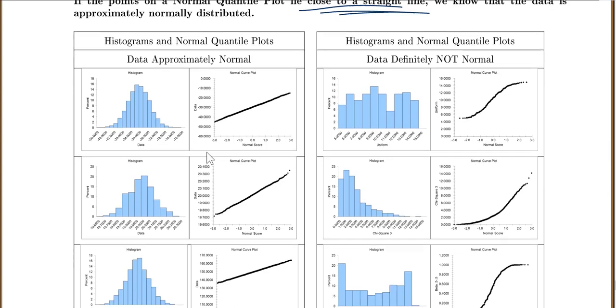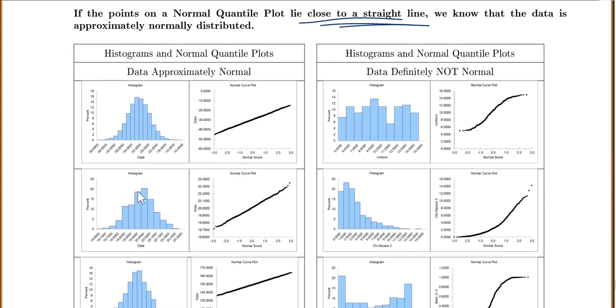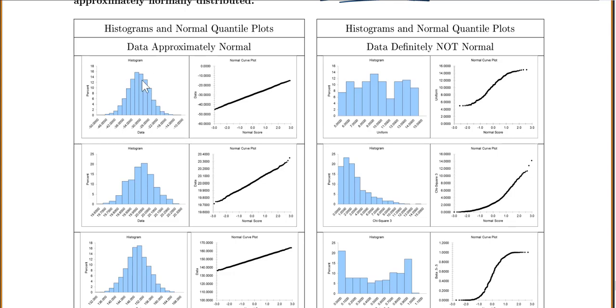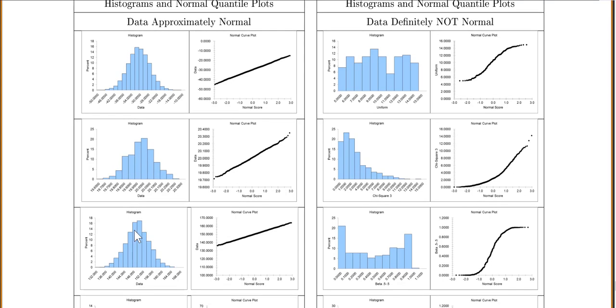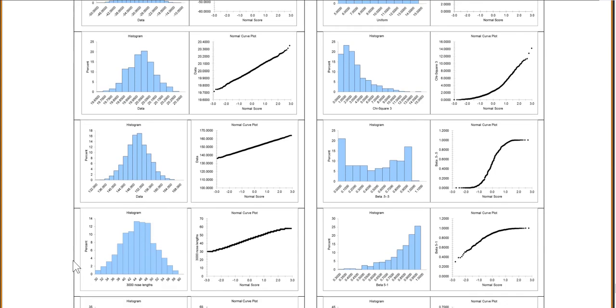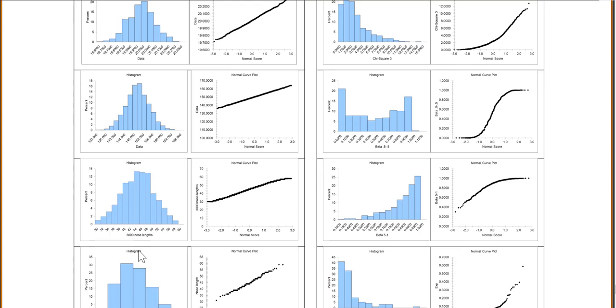So I put these in two columns here. The first column is the data is approximately normally distributed. So you can see here, this one looks very normal, almost exact straight line. This one is kind of fairly mound-shaped, not exactly normal, but pretty close, and fairly straight line. These are all fairly straight lines, and the histograms look fairly normal.